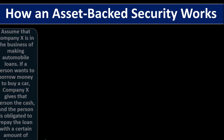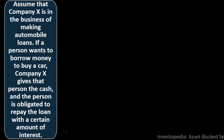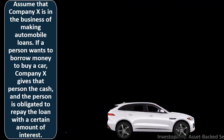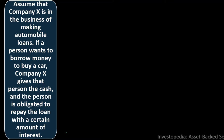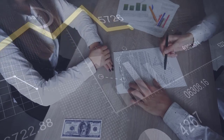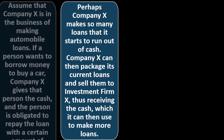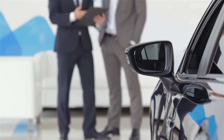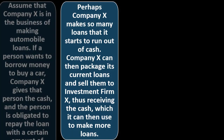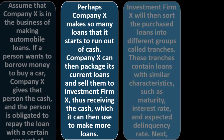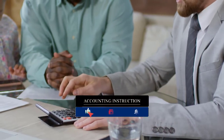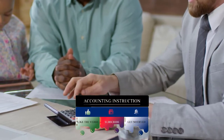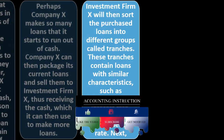To illustrate how an ABS works: assume Company X makes automobile loans. A person borrows money to buy a car, and Company X gives them cash; the person repays the loan with interest, using the car as collateral. If Company X makes so many loans that it starts to run out of cash, it can package its current loans and sell them to Investment Firm X, receiving cash which it can then use to make more loans — solving the cash flow problem.